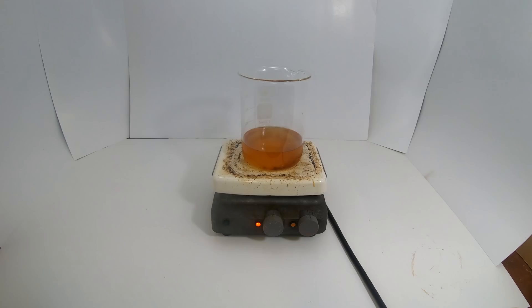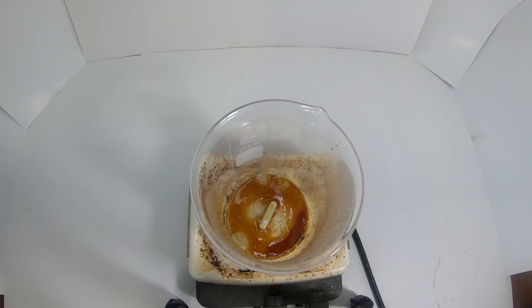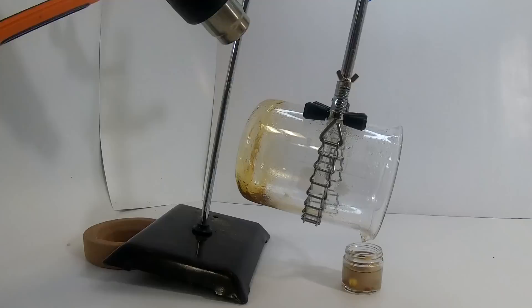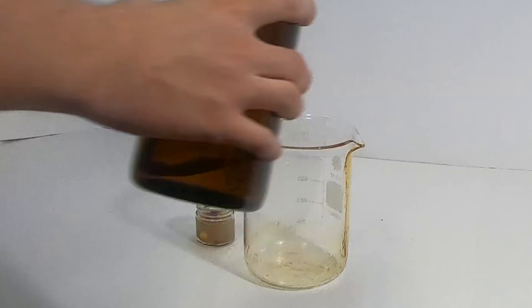I proceeded to continue evaporating the solution in the beaker until there was about 20 milliliters or so left. I then poured what remained into a small glass jar and set up a little rig so that I could use a heat gun to remove the concentrate that was stuck to the beaker.